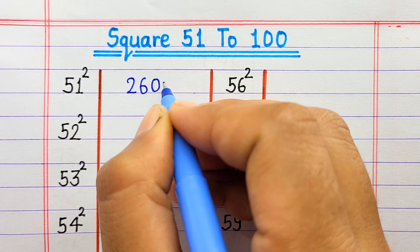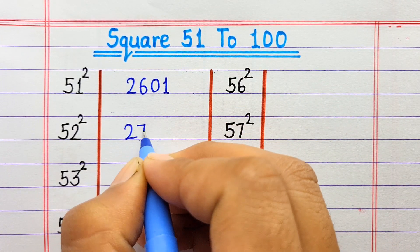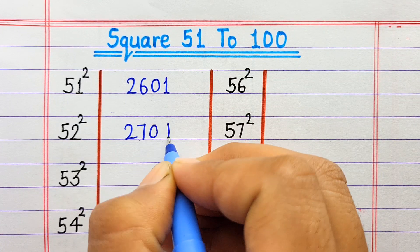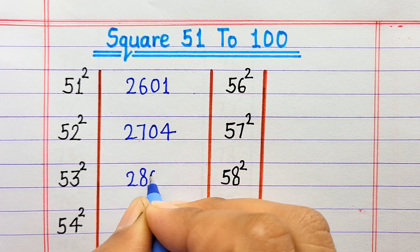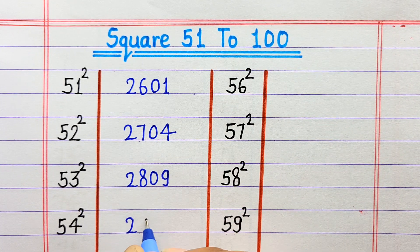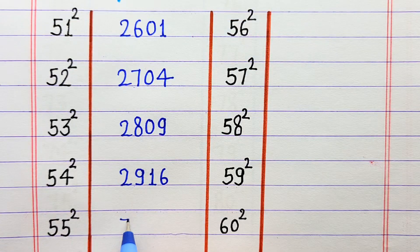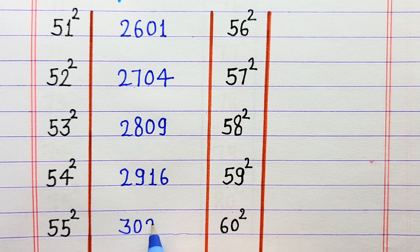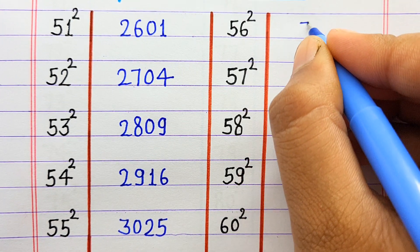51 ka square 2601, 52 ka square 2704, 53 ka square 2809, 54 ka square 2916, 55 ka square 3025, 56 ka square 3136.